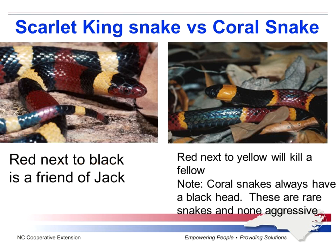Colorful snakes really scare people. This is a picture of a scarlet kingsnake versus a coral snake, and they look very similar. Coral snakes are very, very rare — they're on the endangered species list, and it's very rare for someone to come across one.